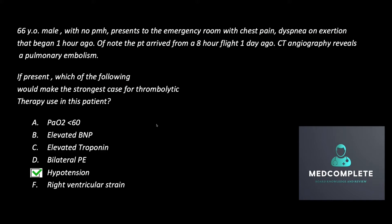Submassive PE is the patient that has these findings but does not have hypotension and does not have hemodynamic instability. That's the patient who oftentimes can be a little hypoxemic, but more importantly has an elevation in BNP and an elevation in troponin. Those two are a marker for increased mortality in these patients and are a sign of right ventricular strain. Right ventricular strain can be seen on CT, but it's much better evaluated on echo — sometimes described as right ventricular dilation, which is the same thing.